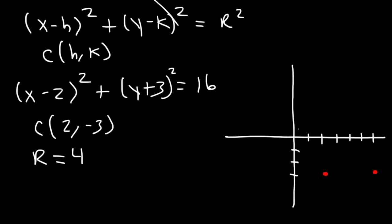Then 4 units to the left relative to the center, which takes us to the point (negative 2, negative 3). Then we need to go up 4 units — negative 3 plus 4 is 1 — so that takes us to the point (2, 1). And then down 4 units: negative 3 minus 4 is negative 7, so that takes us to the point (2, negative 7). Then simply plot the 4 points that are on the edge of the circle.